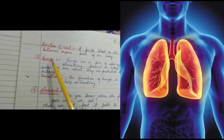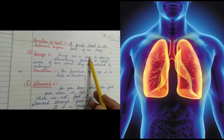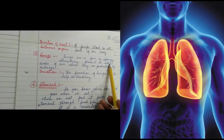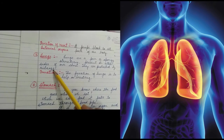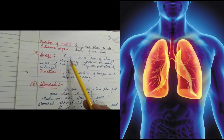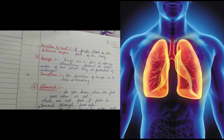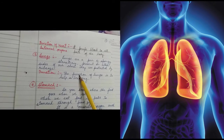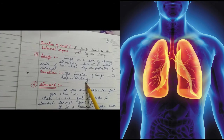The next internal organ is lungs. Lungs are a pair of spongy structures present on either side of the chest. They are protected by the rib cage. There are two lungs — one on the left side and one on the right side. The function of the lungs is to help in breathing.